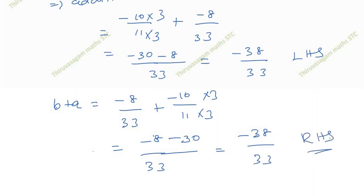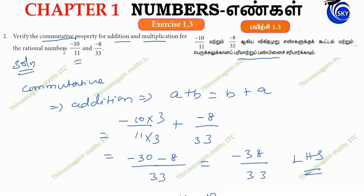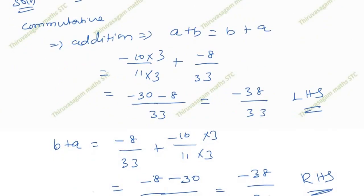Minus 38 by 33, that is the RHS. LHS equals RHS, so the commutative property for addition is satisfied.